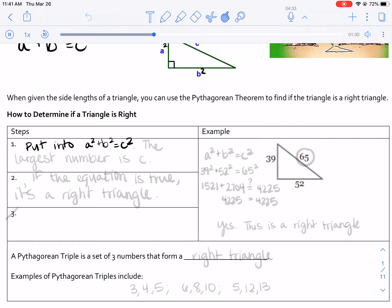So our first step is we're going to put it into a² + b² = c². And remember, the very important part is that the largest number will be c.